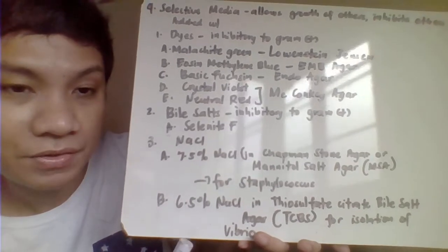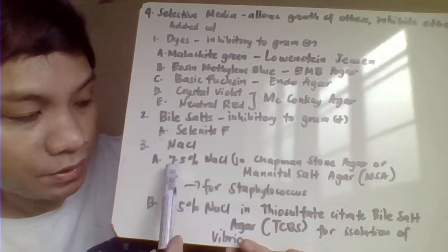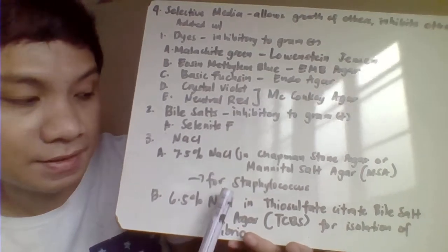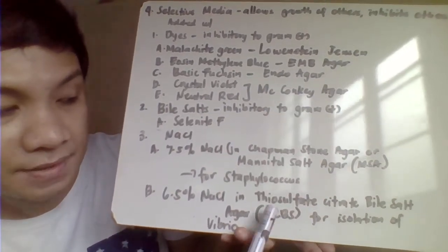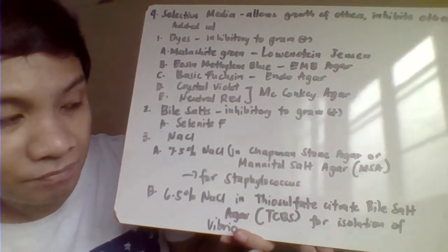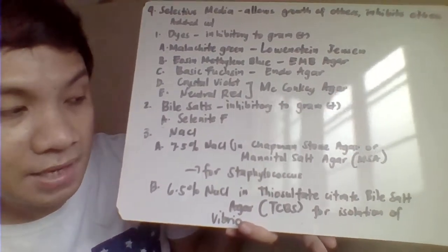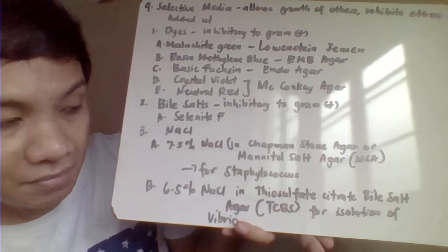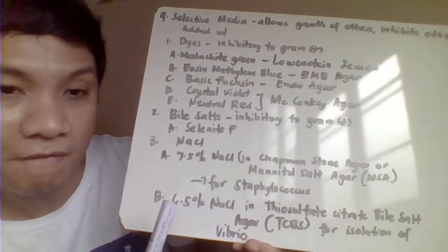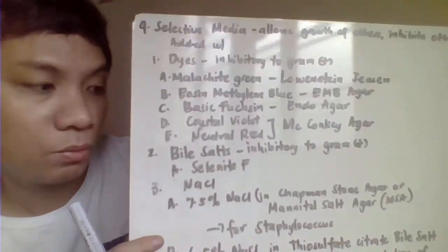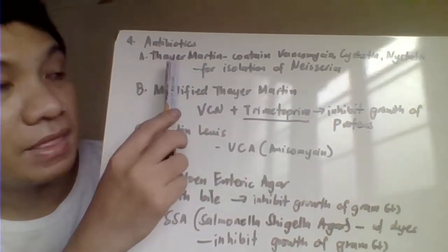Salts like sodium chloride can also provide selectivity. A concentration of 7.5% sodium chloride in Chapman Stone agar or Mannitol Salt Agar allows the growth of Staphylococcus. A concentration of 6.5% sodium chloride is incorporated in TCBS — Thiosulfate Citrate Bile Salts Sucrose — which is the culture media for isolation of Vibrio; other bacteria will not grow.